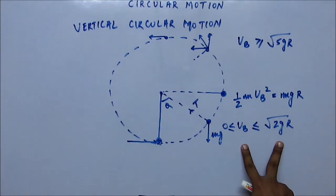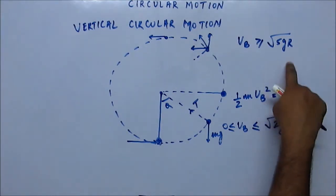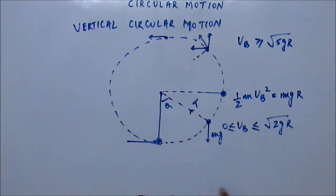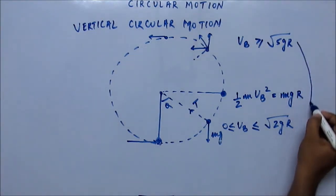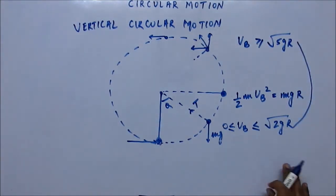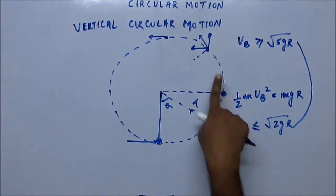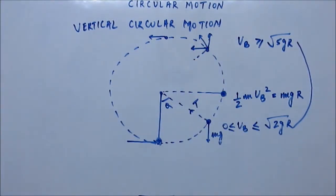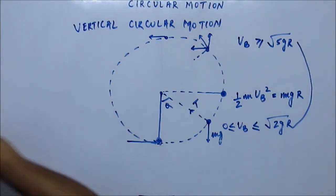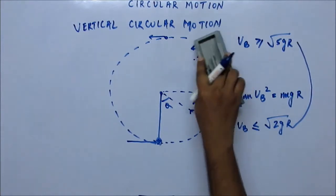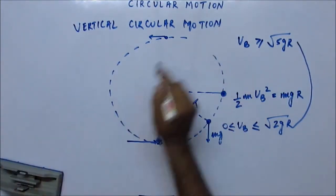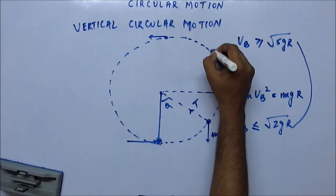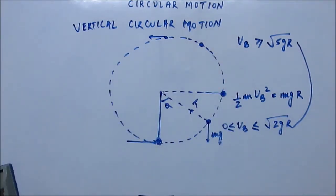So if velocity is greater than 0 and less than or equal to √(2gR), the bob remains in the lower half. If velocity is greater than or equal to √(5gR), it completes the circle. Now let's examine the case between these two: if velocity is greater than √(2gR) and less than √(5gR), that means it crosses the bottom half but cannot complete the full circle — it reaches some intermediate point and something happens. Let's see what would happen by considering an intermediary position.